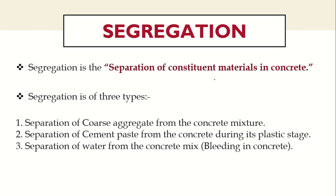The second type of segregation is separation of cement paste from the concrete during its plastic stage. Cement combined with water is called cement paste, and cement paste can also get separated. The third type is separation of water from the concrete mix — if water alone segregates from the mix, that is also a possible case of segregation.